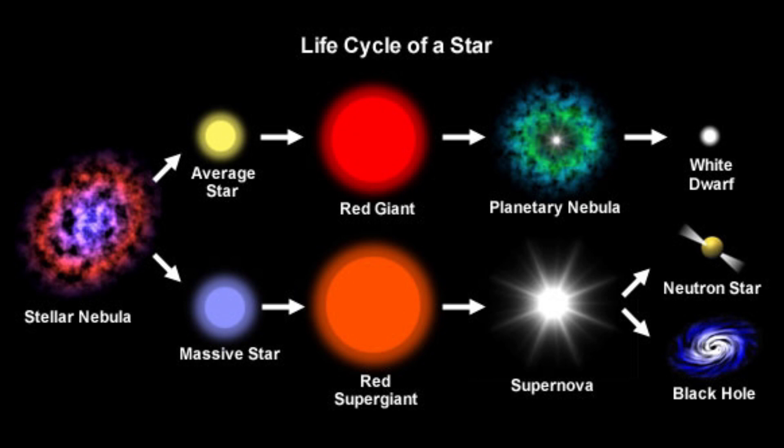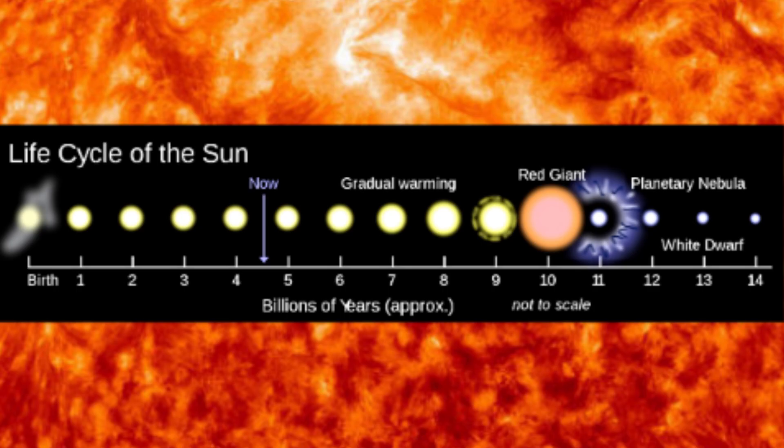A star's life cycle is divided into several stages, from birth to death. The first stage is the main sequence, where the star burns hydrogen to create helium. This is the stage where a star like our sun is currently in.